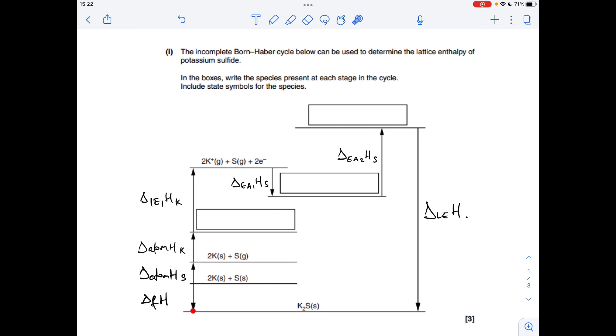So going from here to here, we've got the enthalpy change of formation of potassium sulphide. Now, if you look at where the state symbols are going, there's no change here with the potassium. So this one here is where the change is. So this is the enthalpy change of atomisation of the sulphur.